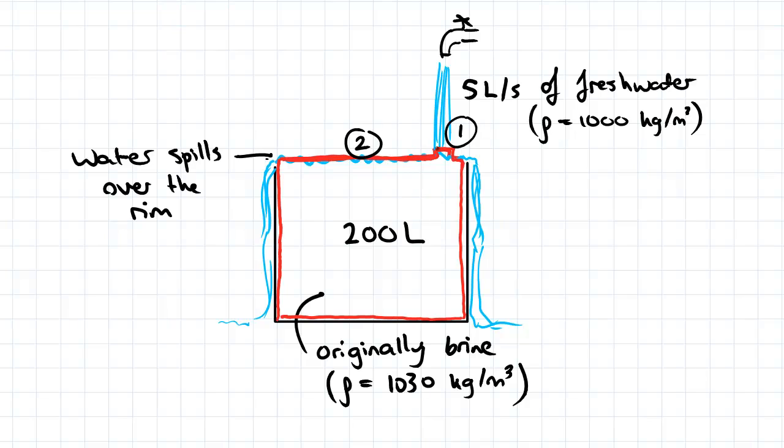Surface 1 is the surface of the inflow, the bit of water coming in from the tap here, the fresh water, and the second surface is going to be the surface of the drum.